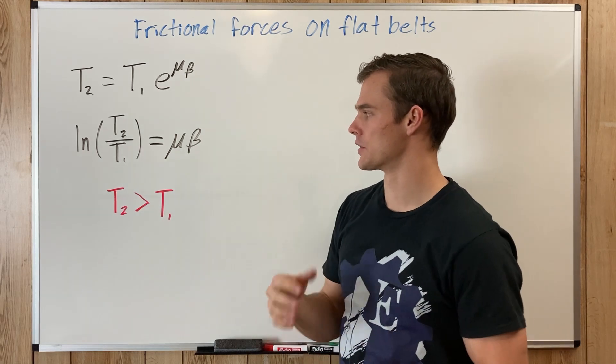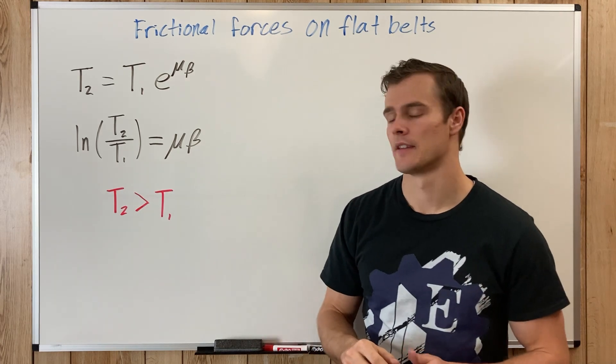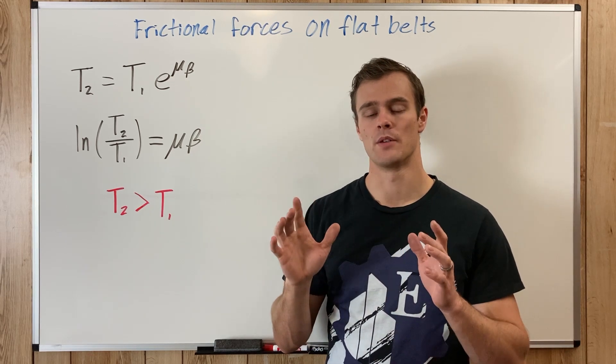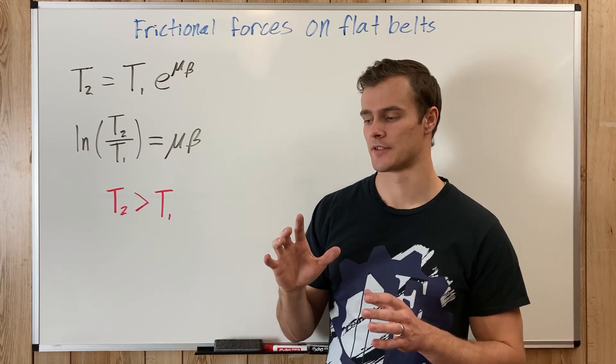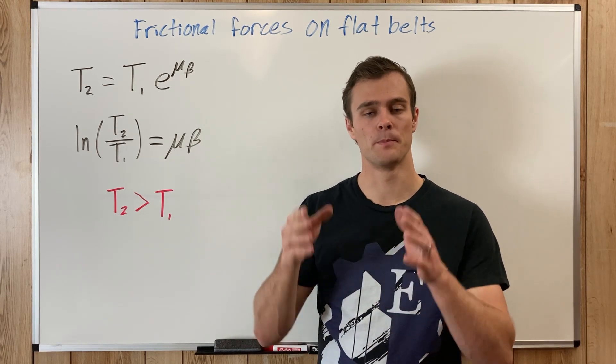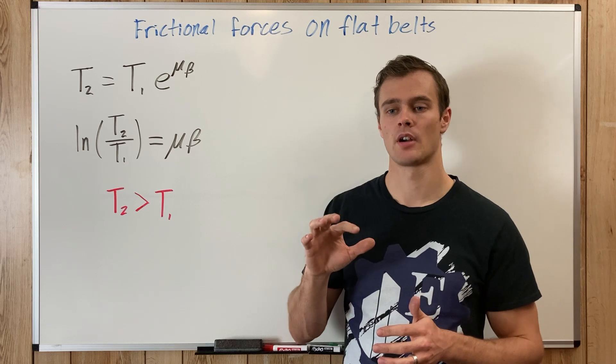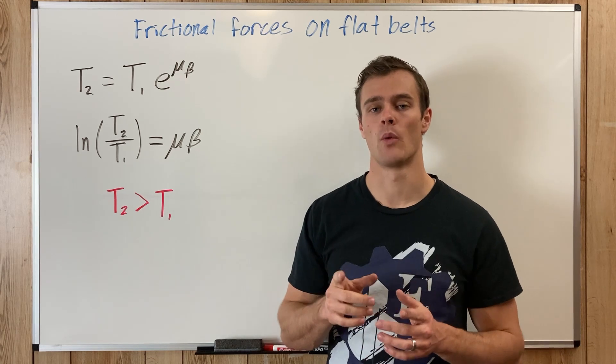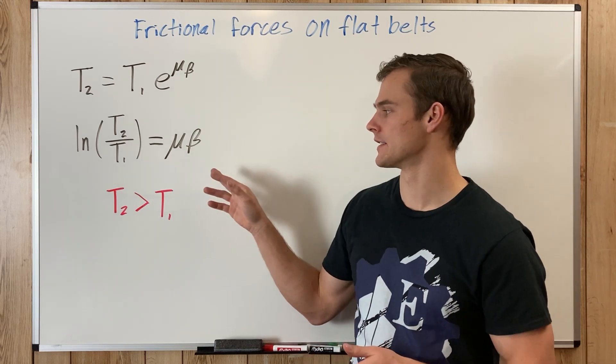That will be the coefficient of whichever friction is involved. Then we have our angle beta, which is the angle measured in radians of where the rope or belt is contacting the surface of the circular object. Say we have a tree branch with a rope hung over it going straight down on either side. The contact angle for that rope is probably about 180 degrees, which measured in radians is pi radians.